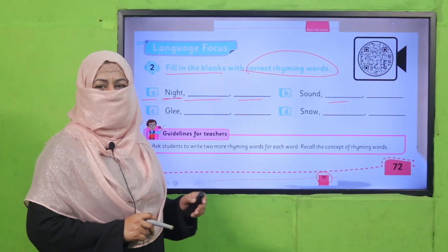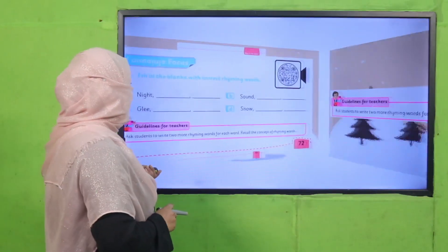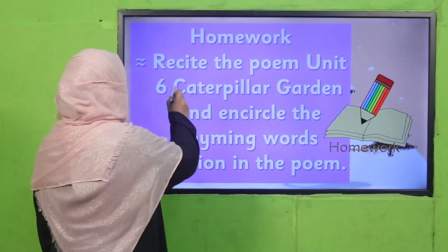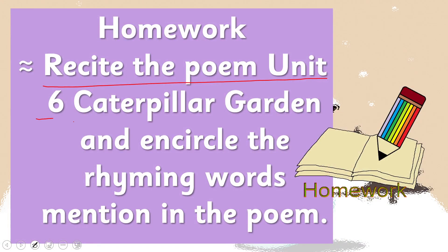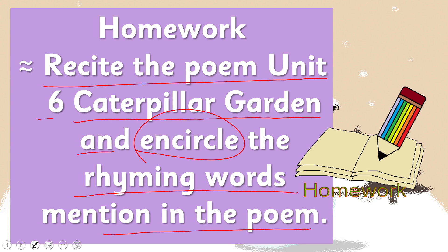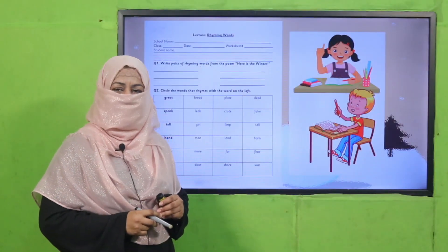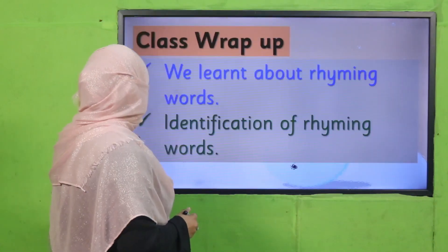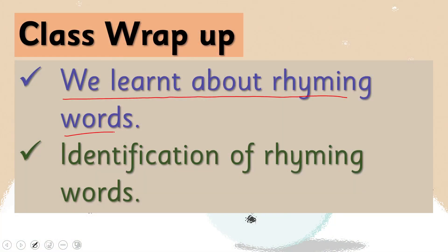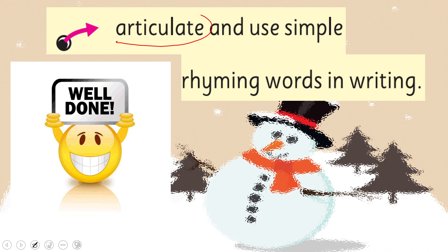Yes my dear students, are you done? That was easy, right! For homework, you will take the poem of Unit 6, 'Caterpillar Garden,' and encircle the rhyming words in that poem. My dear fellow teachers, this worksheet, lesson plan, and PowerPoint presentation links are given — click, download, and provide a printed worksheet to students for practicing rhyming words. Today we learned about rhyming words — identifying them, and using simple rhyming words in writing.